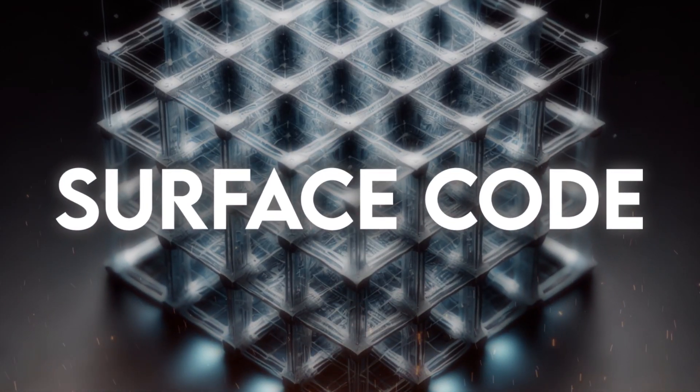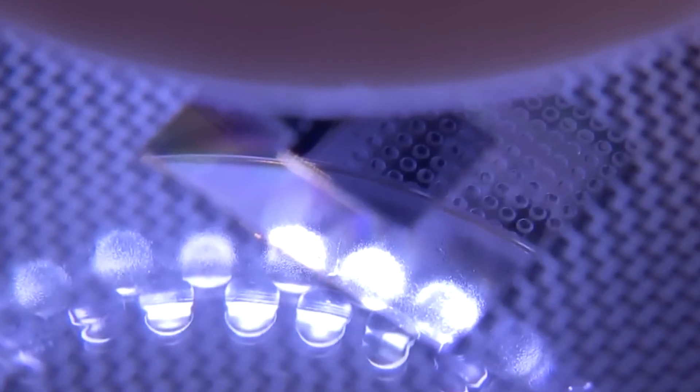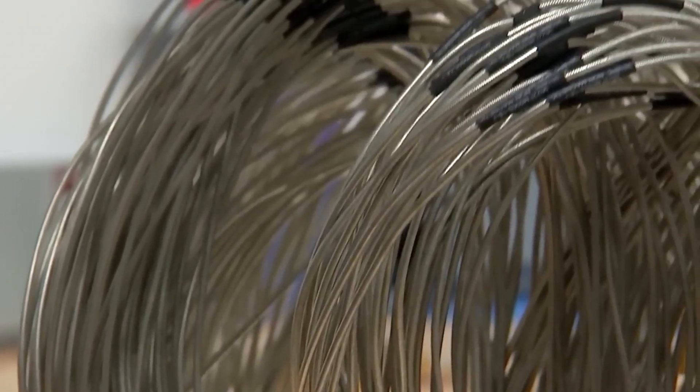They used a method called surface code error correction, which arranges the qubits in a grid and uses clever ways to detect and correct errors by looking at the patterns of errors across neighboring qubits. This improvement in error correction is a major step towards building practical, fault-tolerant quantum computers.